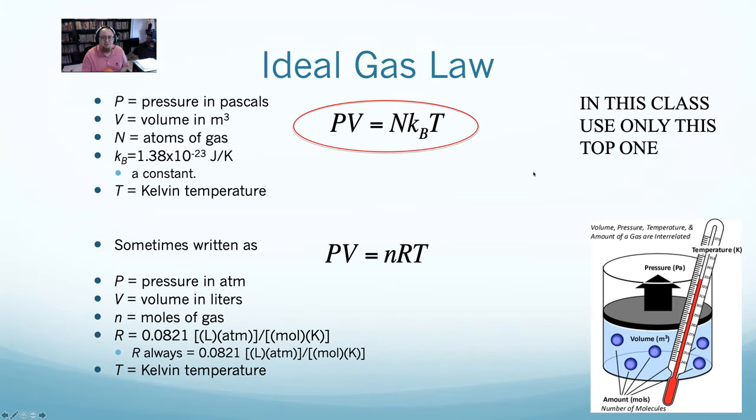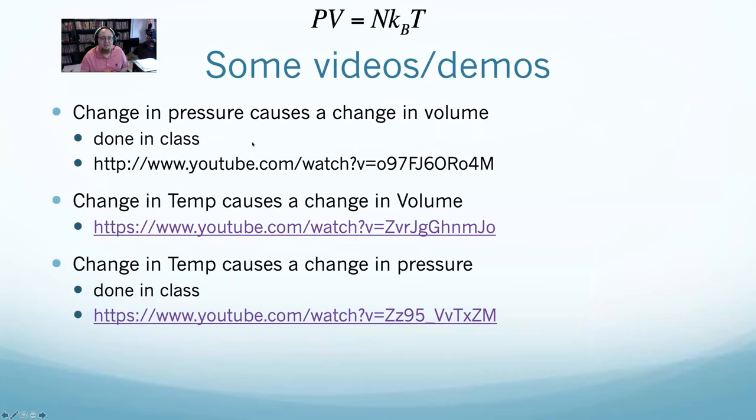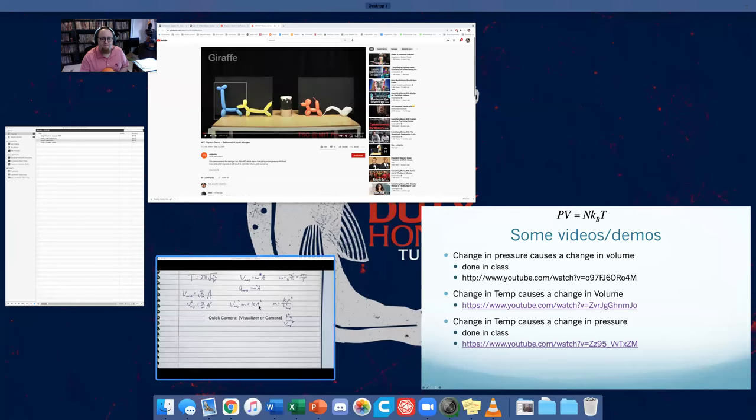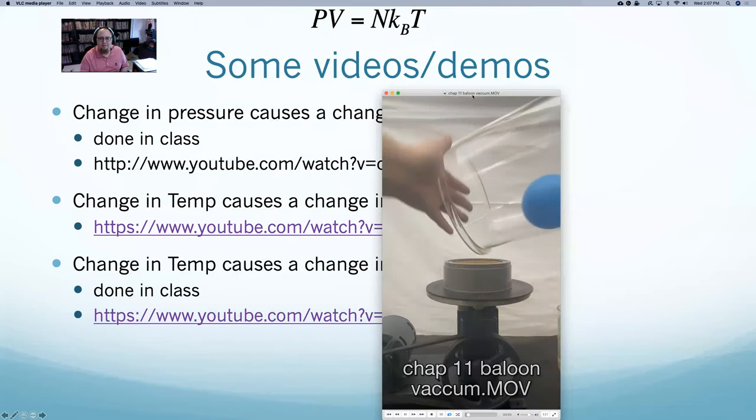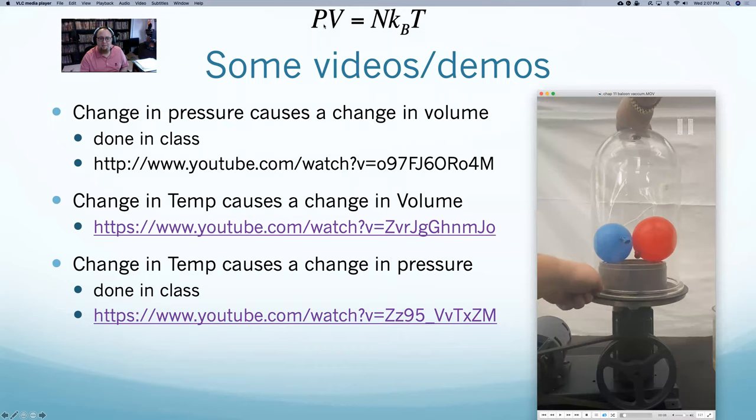I've got a ton of videos to show this law in action, where I can show how changing each thing affects it. The first one is that pressure causes a change in volume. What I have here is some balloons, and I am putting these balloons in a vacuum chamber. I'm not changing the temperature, I'm not changing N. What I'm going to do is drop the pressure. What you can see is as the pressure goes down, these balloons are growing. Their volume is going up.